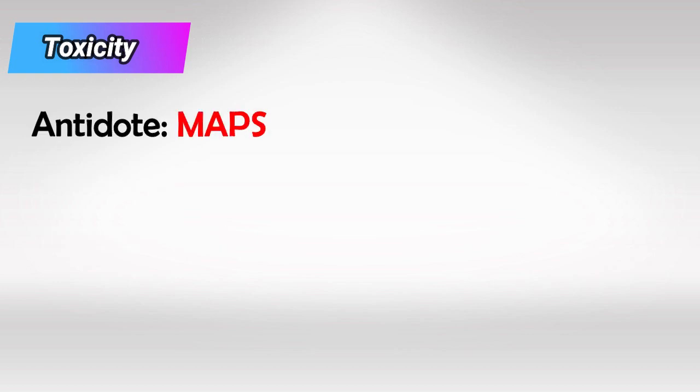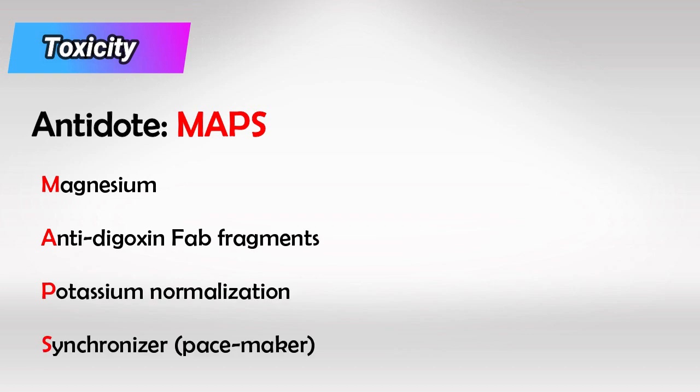To remember the antidote or the treatment for toxicity, I remember MAPS. So M for magnesium, A for anti-digoxin antibodies, P for potassium normalization, you'll have to put potassium back to its normal levels, and S for pacemaker or synchronizer.